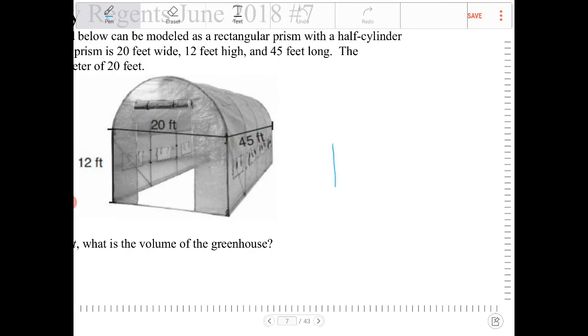What we're going to do is determine the volume of the bottom portion of the greenhouse, which is a rectangular prism, and then separately determine the volume of the half-cylinder, which is the top portion of the greenhouse.